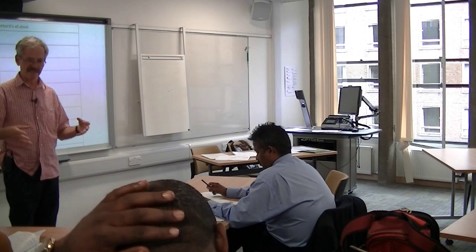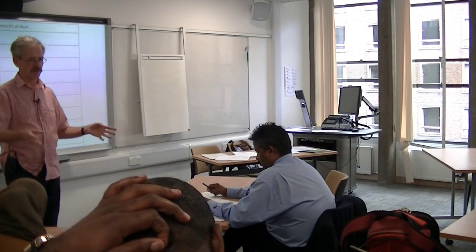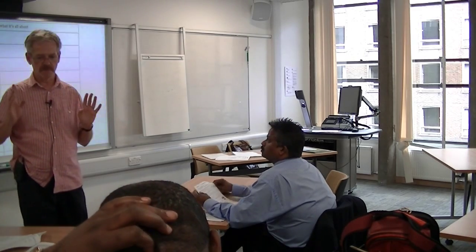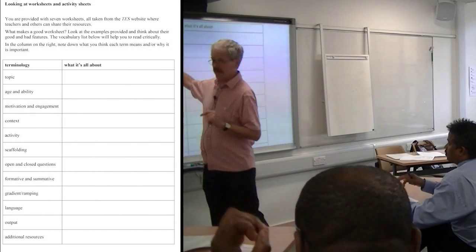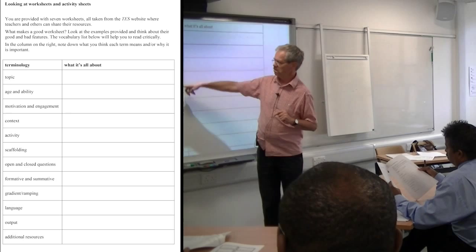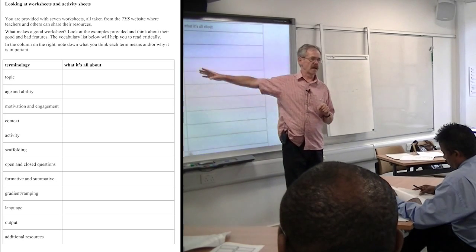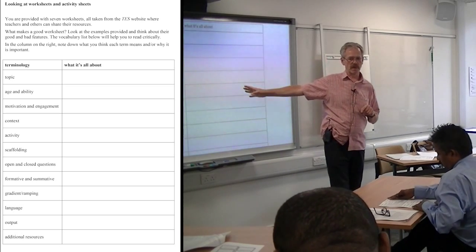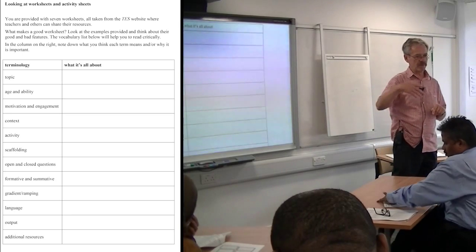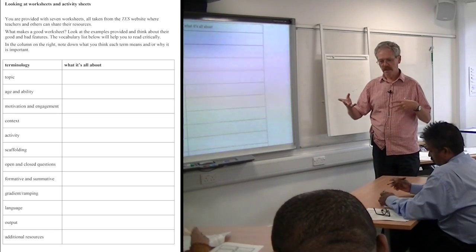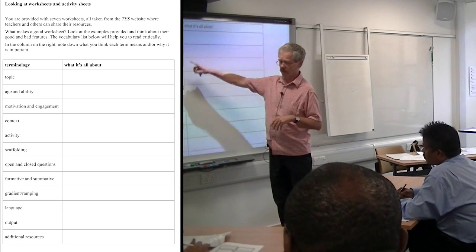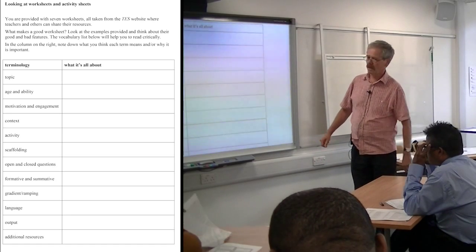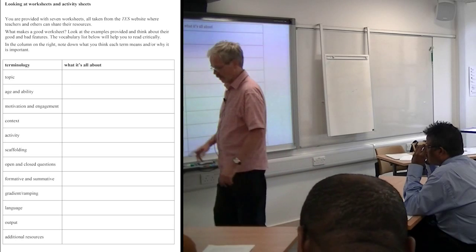Think about what it is that makes a good worksheet, and what you might do to improve them. If you haven't had a chance to look at them, the sheet on the front is a list of bits of terminology we're going to discuss. I'd like you to think about what these different words mean as you look through — just jot some ideas down, flip through the worksheets, and make some notes about what you think some of these terms mean. Some are more obvious than others. We'll give you five minutes and then we'll talk about what some of these things mean and why they're important.